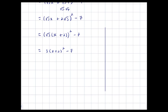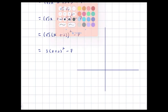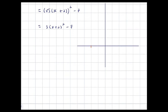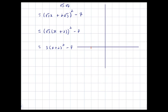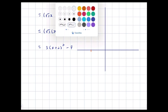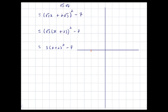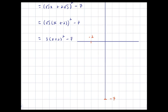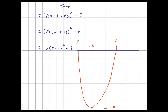Now I can graph this thing. The vertex is at (−2, −7). In the form a(x − h)² + k, the k is −7 and the h is −2, because x − (−2) = x + 2. So the vertex is at (−2, −7), and the parabola opens upward.